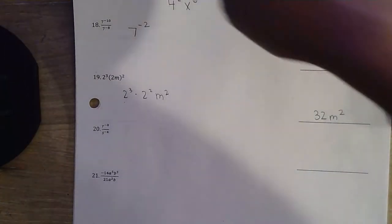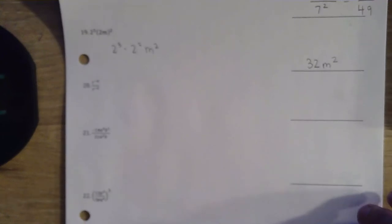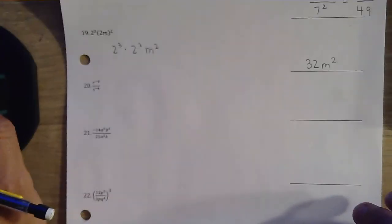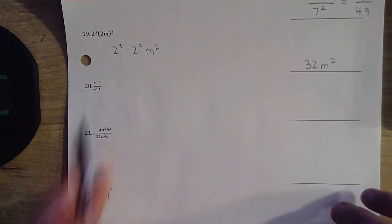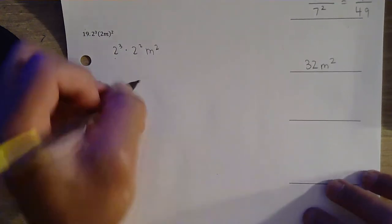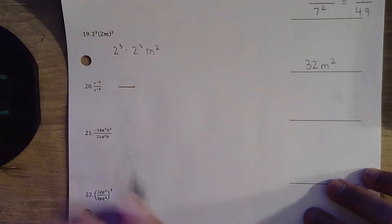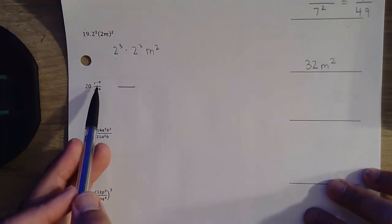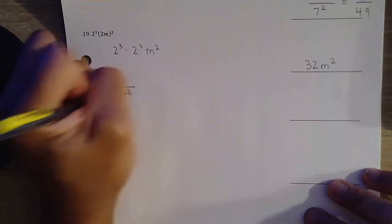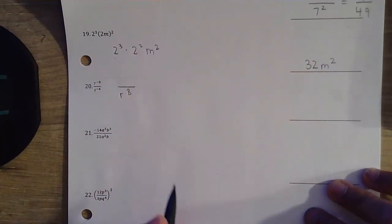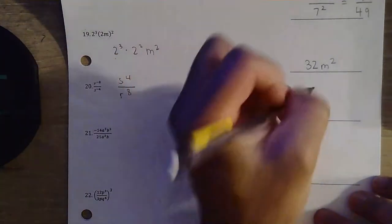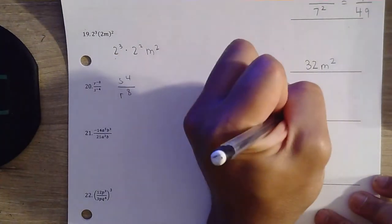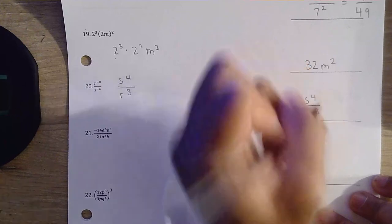Question number 20. We don't have the same base, so we can't do anything with these exponents. But we do have negative exponents — make a fraction. r to the negative 8th, we move it down. s to the negative 4, we move it up. That's our final answer: s to the 4th over r to the 8th power.